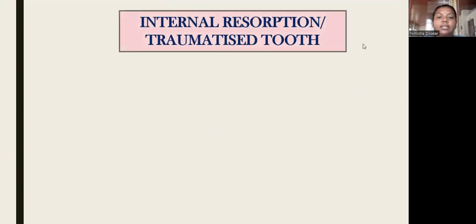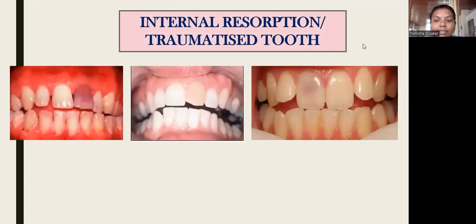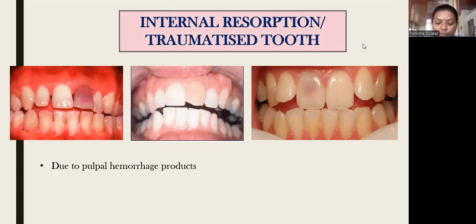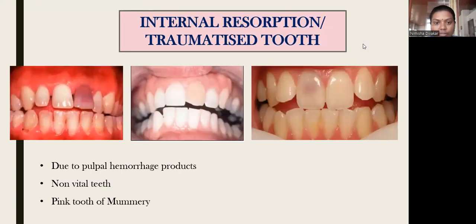Next is internal resorption or traumatized tooth, which we commonly see in clinical practice. A single tooth becomes discolored, mostly due to trauma and pulp hemorrhage products, making the tooth non-vital. This is known as pink tooth of Mummery — the tooth appears pink in color due to pulp hemorrhage products.